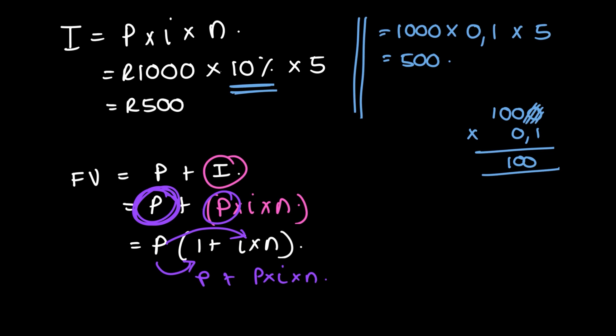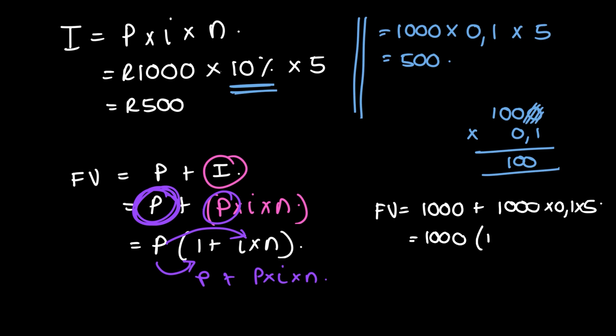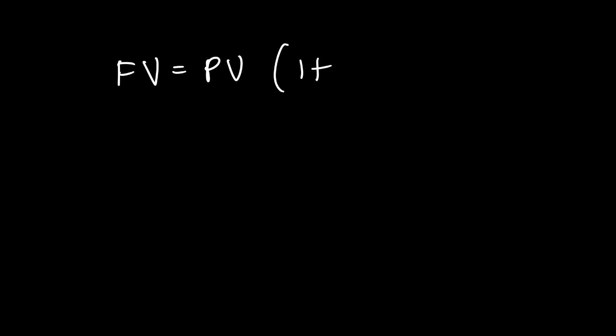A slightly easier way to see this is to put in the numbers: future value equals a thousand plus a thousand times 0.1 times five. You can see a thousand is a common factor, so it becomes a thousand times one plus 0.1 times five, which also gives you 1500. So the formula for simple interest is: future value equals present value times one plus i times n.